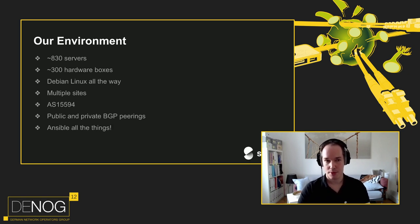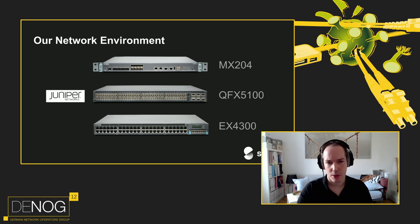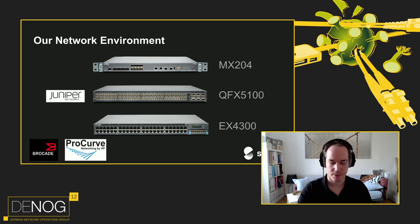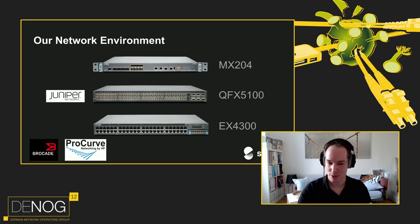It's Ansible all the things — we use Ansible for server deployment, service deployments, and of course for the network. Our network environment is mostly Juniper boxes, with occasional legacy devices from either Brocade or Procurve. But those latter two kindly resist any kind of automation. For example, automating a Procurve switch requires rendering a template locally, uploading it via SCP, and it will apply the config by rebooting — probably nothing you want in production.